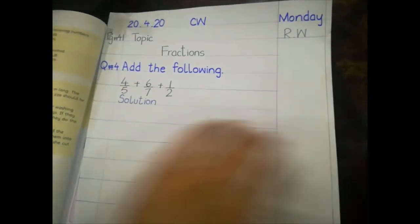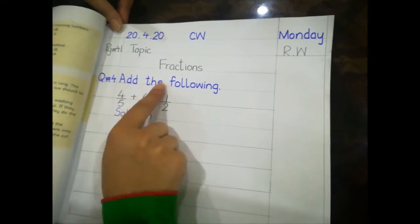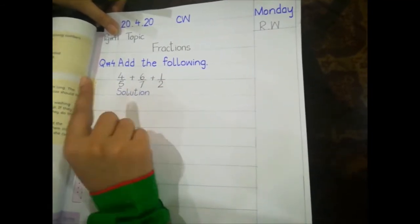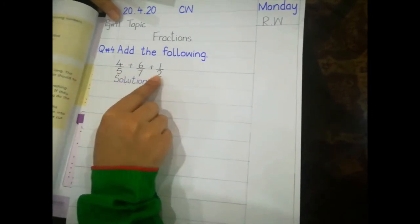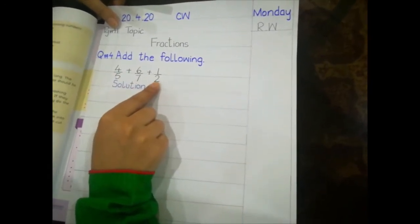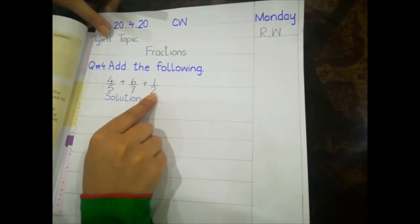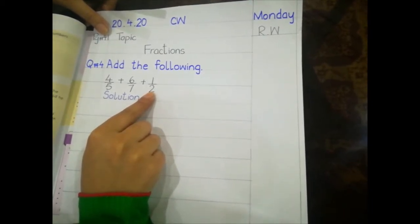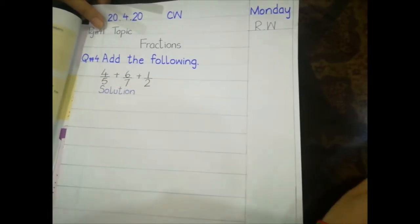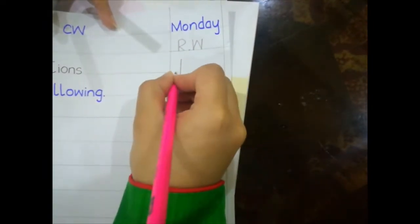First, prepare your copy: date, classwork, page number 41, topic is fractions, question number 4 — add the following: 4 by 5, 6 by 7, 1 by 2. Look at the denominators — they are different, so these are unlike fractions. We cannot add unlike fractions until we convert them into like fractions, and we do that by taking the LCM of the denominators. The denominators are 5, 7, and 2.